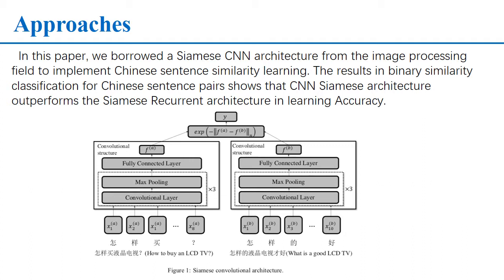This is our model architecture. In this architecture, there are two identical convolutional structures. The input of each convolutional structure is a word-level embedding of a sentence, and the output of each convolutional structure is a sentence-level representation. Then, a similarity matrix is used to compare the outputs of the two convolutional structures.